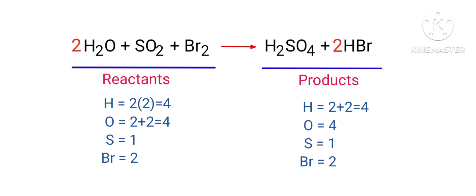The equation is now balanced. There are four hydrogen atoms, four oxygen atoms, one sulfur atom, and two bromine atoms on both sides.